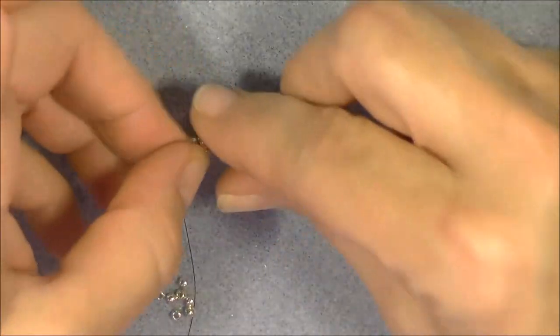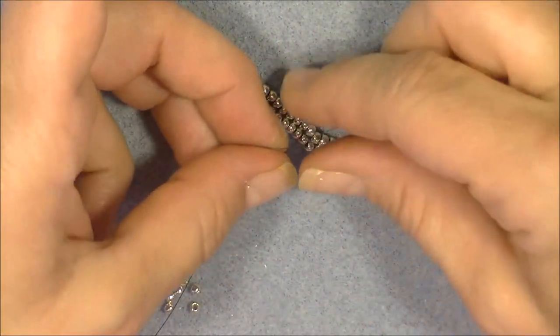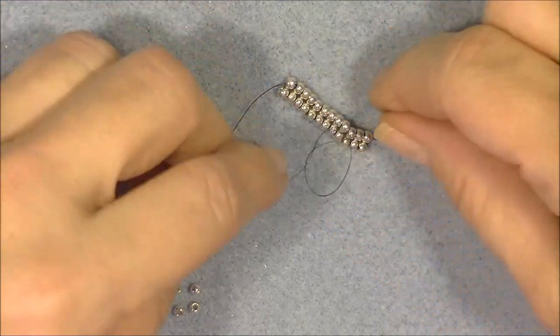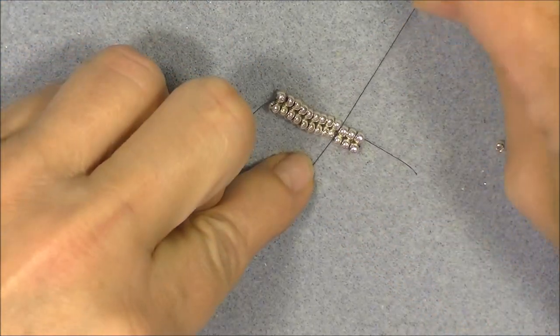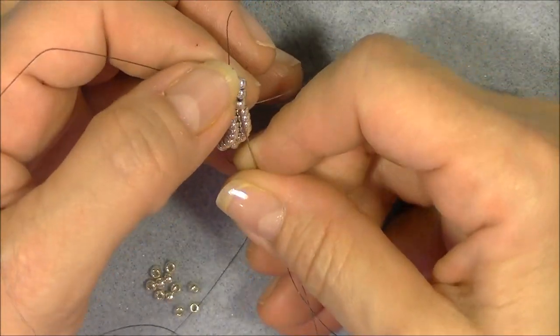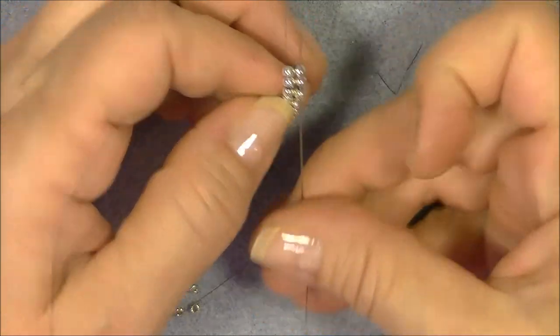I am going to tie an overhand knot on that thread bridge and then bring it down between the beads. Then I am going to sew through my beads so I'm going to go up through this one.